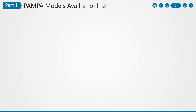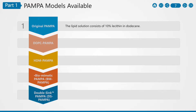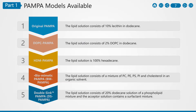The available PAMPA models include: Original PAMPA, where the lipid solution consists of 10% lecithin in dodecane; DOPC PAMPA, where the lipid solution consists of 2% DOPC in dodecane; HDM PAMPA, where the lipid solution is 100% hexadecane; Biomimetic PAMPA (BM-PAMPA), where the lipid solution consists of a mixture of PC, PE, PS, PI, and cholesterol in an organic solvent; and Double-SYNC PAMPA (DS-PAMPA), where the lipid solution consists of a 20% dodecane solution of a phospholipid mixture, and the acceptor solution contains a surfactant mixture.